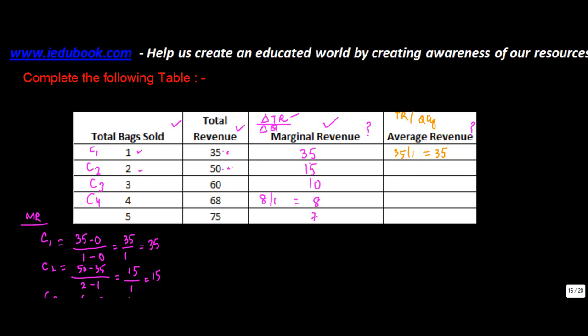What's the total revenue in case 2? 50. The total quantity is 2. So this becomes 50 divided by quantity which is 2. 25. Case 3. Total revenue is 60. So 60 divided by quantity. Quantity is 3. 20.